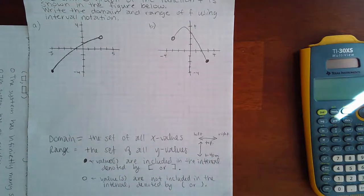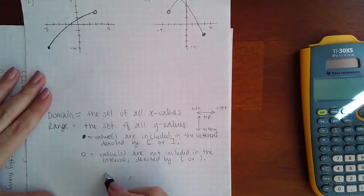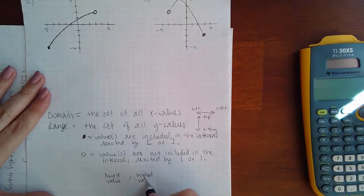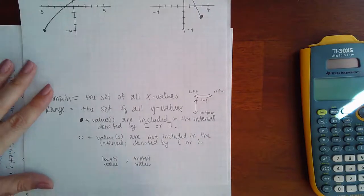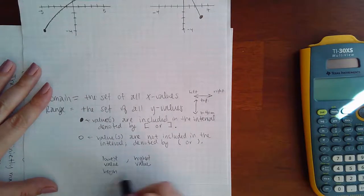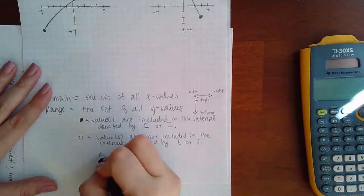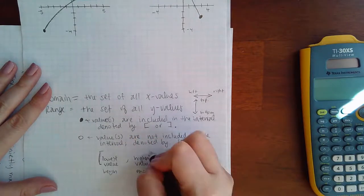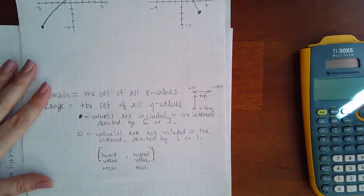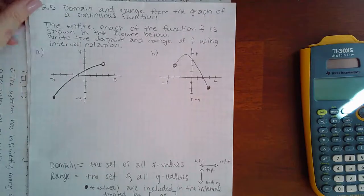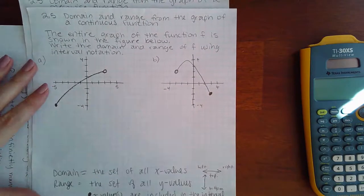In interval notation, it does need to be formal. And when you do use your interval notation, this should always be the lowest value, and this should always be the highest value. So this is where you begin, and this is where it ends. And then depending on the problem, you'll have a parenthesis or a bracket here or parenthesis or a bracket there. It just depends on the kind of dots that you have at those ends. So let's take a look at the first example using that information.